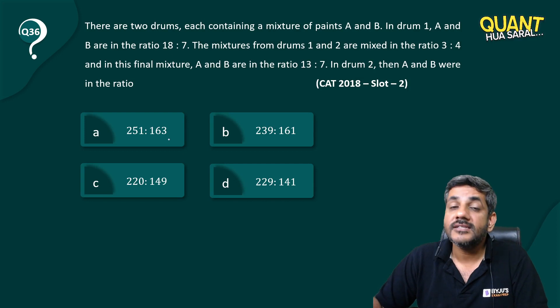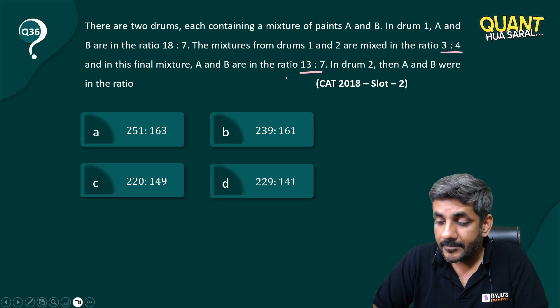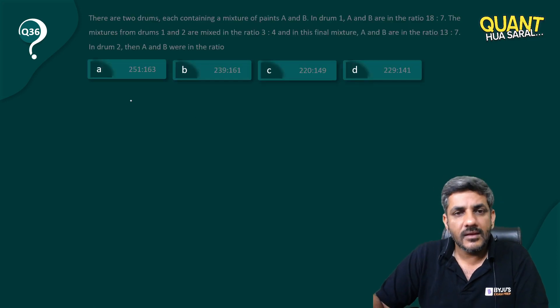A and B are in the ratio 18:7. In drum 2, we do not know the ratio, but they are mixed in a ratio of 3:4 such that the final ratio of A and B is 13:7. So what is the ratio of A and B in the second one?